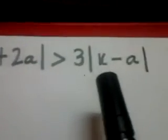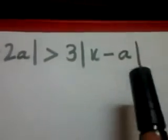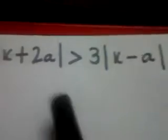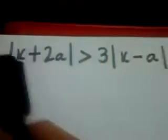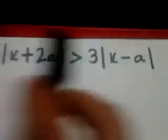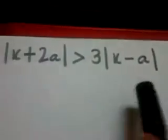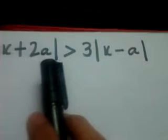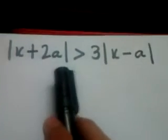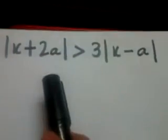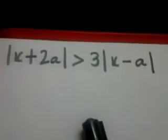Today we have the inequality: the modulus of x plus 2a is greater than 3 times the modulus of x minus a. In this inequality, a is a constant whose value is not given — it may be 1, 2, 3, it may be anything, but its value is not given.